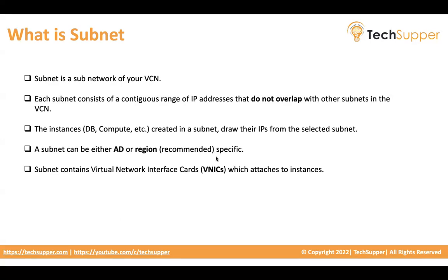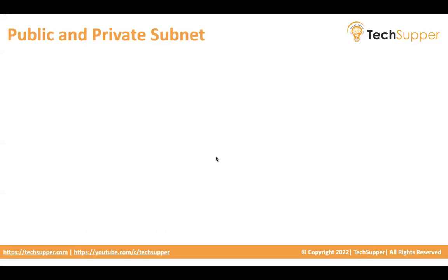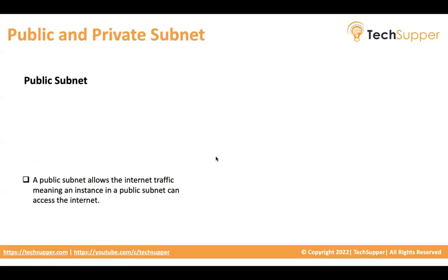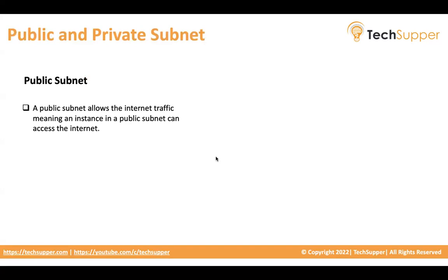Subnets contain VNICs which attach to your instances. Now let's understand public and private subnets. A public subnet is one that hosts public-facing resources. A public subnet allows internet traffic, meaning an instance in a public subnet can access the internet. For example, your web server should be in a public subnet so that traffic can come in and go out to the internet.